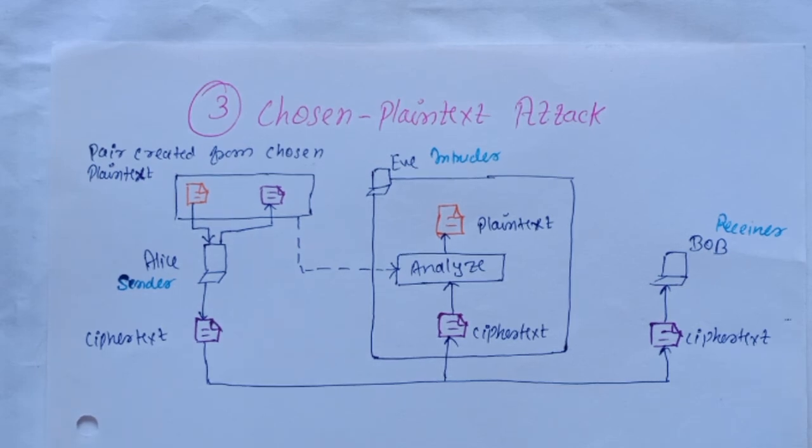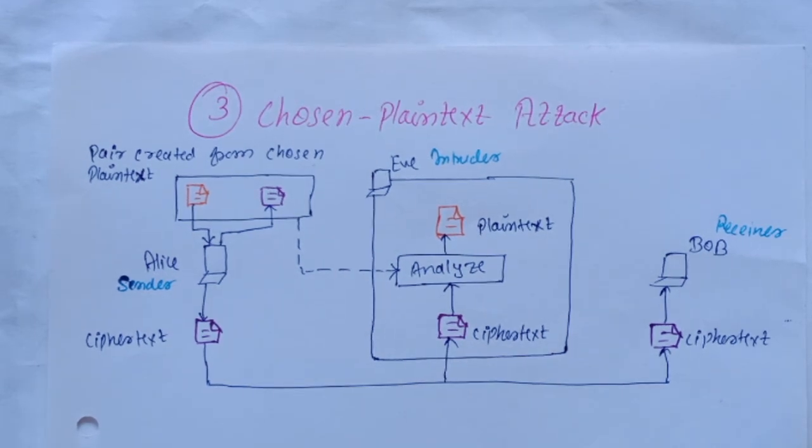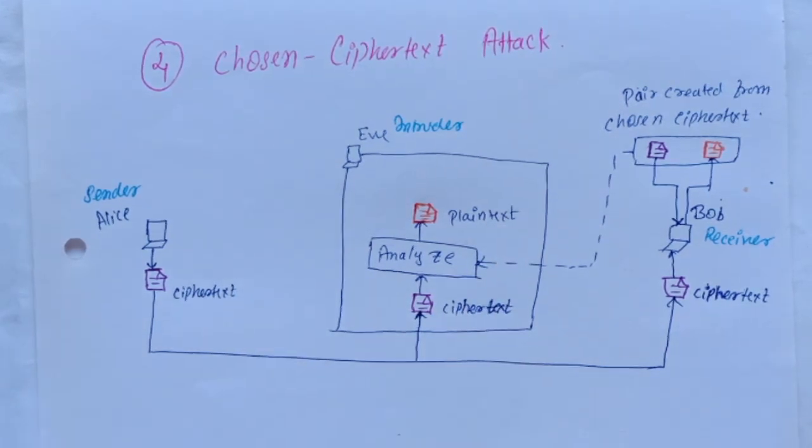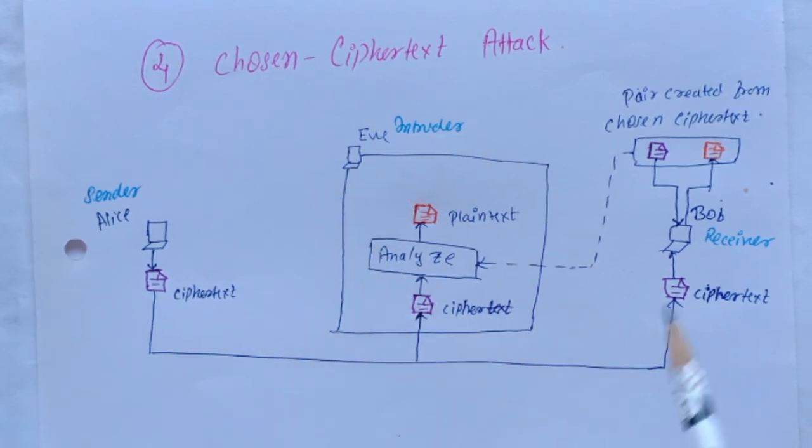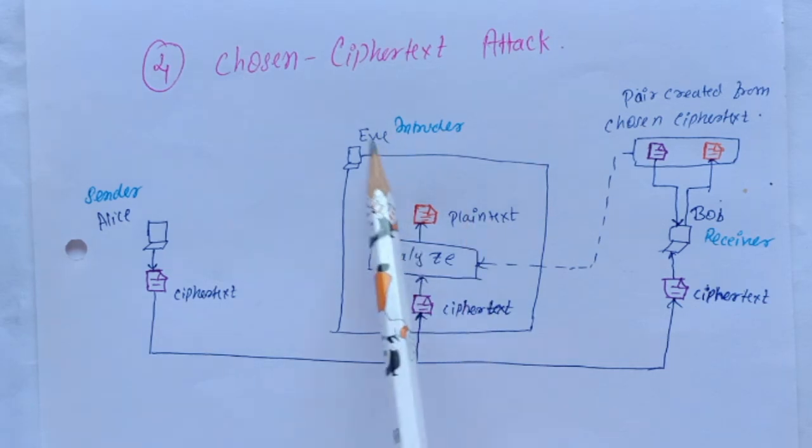But Eve may not have access to the key because the key is normally embedded in the software by the sender. Next is chosen ciphertext attack. It is similar to chosen plaintext attack except that the intruder Eve chooses some ciphertext and forms a ciphertext plaintext pair at the receiver. This can happen if the intruder has access to the receiver's computer.